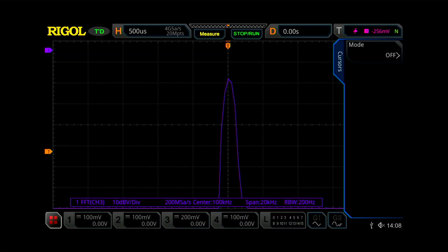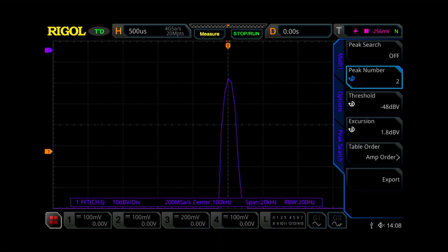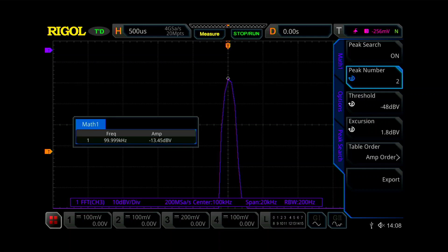Let's get rid of cursors. Let's turn off cursors. And we're going to go back to our math FFT. And we're going to go to more. And now there's a peak search. So if you click on peak search, you can search on number of peaks. So we'll have it. We're searching on two different peaks.